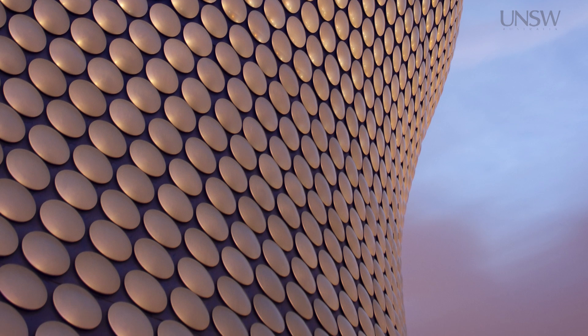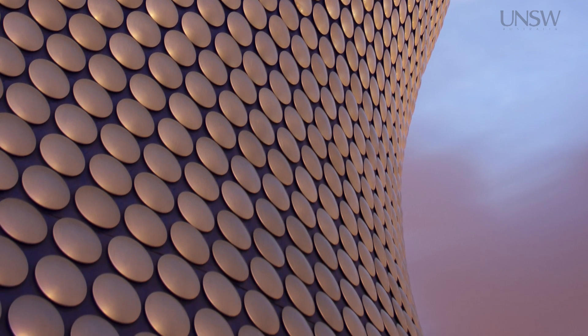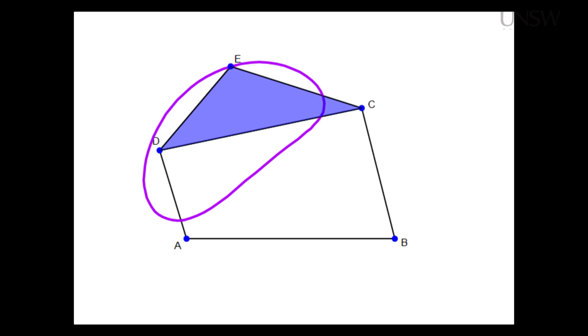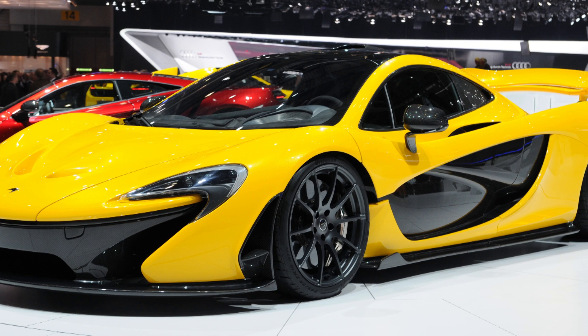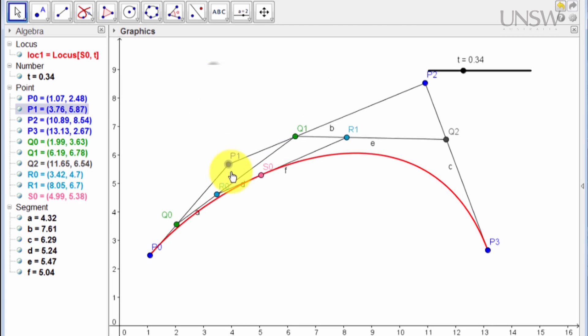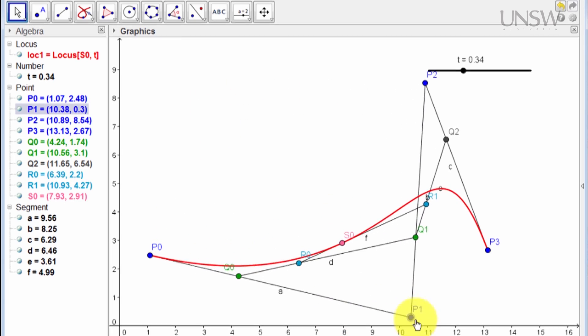Our second course is called Curves from Apollonius to Bézier, and there we're looking at a topic of considerable interest to high school mathematics. The notion of curve includes conics going back to Apollonius, through 17th century developments with mechanical kinds of curves connecting with the industrial revolution, all the way up to very recent developments coming from the automotive industry. Along the way we'll have a little bit of experience learning about GeoGebra, a very practical and useful tool that you can bring to the classroom.